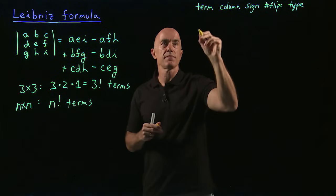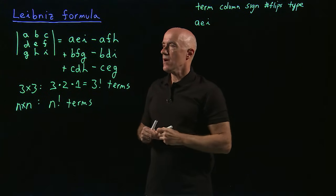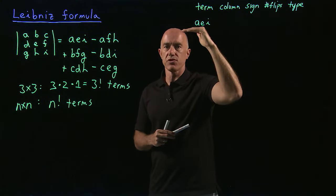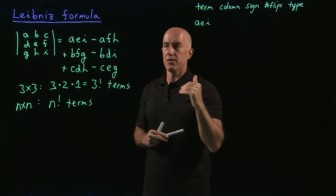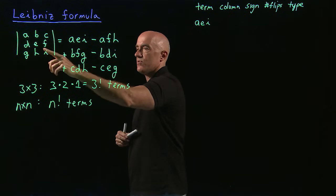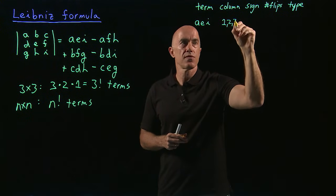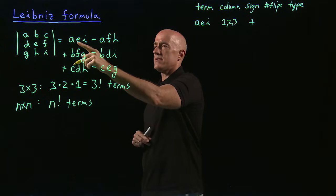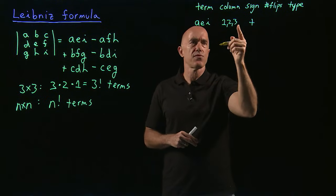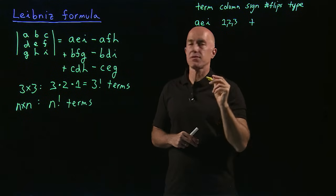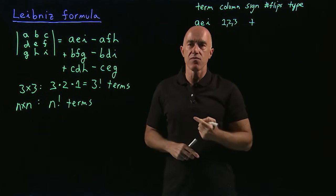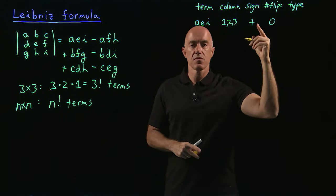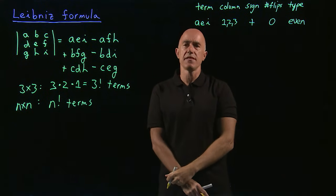Let's consider the first term, A, E, I. What is the column order? A is from column one, E is from column two, I is from column three — so the column order is 1, 2, 3. The sign is plus. How many interchanges do we need to go from 1, 2, 3 to 1, 2, 3? That's zero interchanges. Zero is an even number, so I'll call that even.